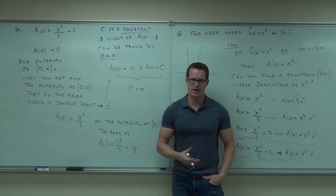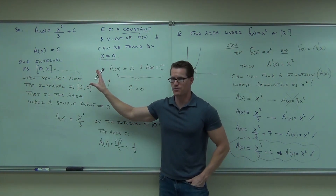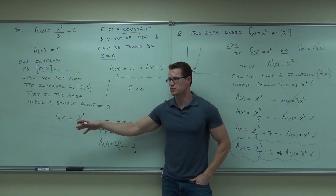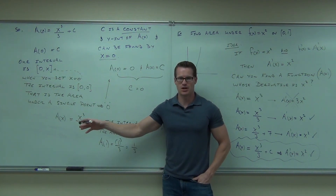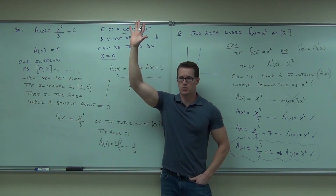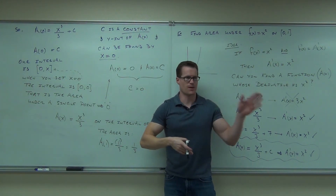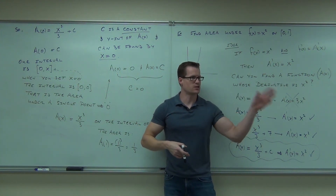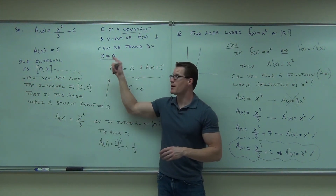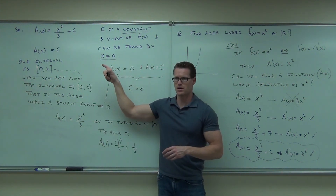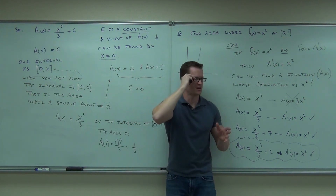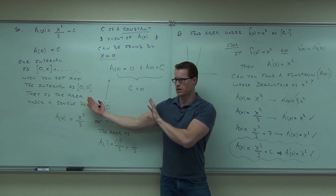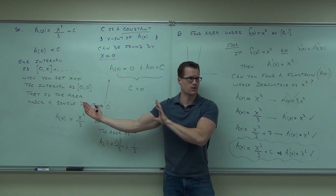That's the idea — introduced through geometry. The rectangular method cuts the region into rectangles; we'll talk about that later. The anti-derivative method says the first derivative of the area function is my function, so undo the derivative. You get an anti-derivative, figure out what C is, and find the area. I'll show you better ways to do this, but you need to understand the idea first.